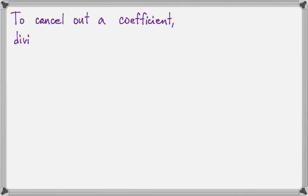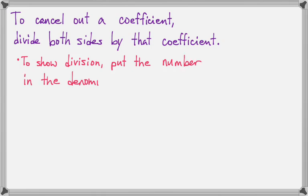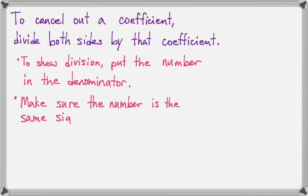Now let's look at equations where we don't have x divided by a number, but we have x times a number. To cancel out a coefficient, you're just going to divide both sides by that coefficient. To show division, we'll put the new number in the denominator, just like we've been doing throughout the order of operations. Make sure that the number you put in the bottom is the same sign as the number you're trying to cancel out.